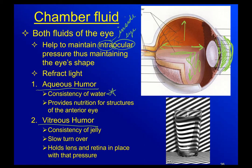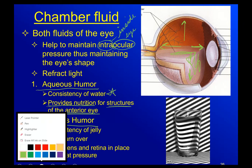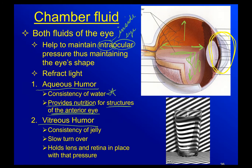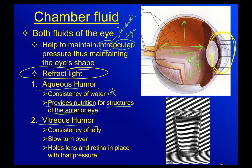The aqueous humor is the consistency of water. It is basically a substitute blood supply, providing nutrition for the structures of the anterior eye. This is one reason the cornea can be transplanted without tissue typing — instead of a direct blood supply, it has this aqueous humor acting as a substitute.